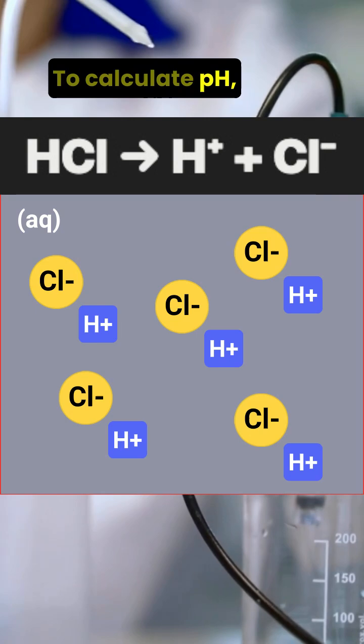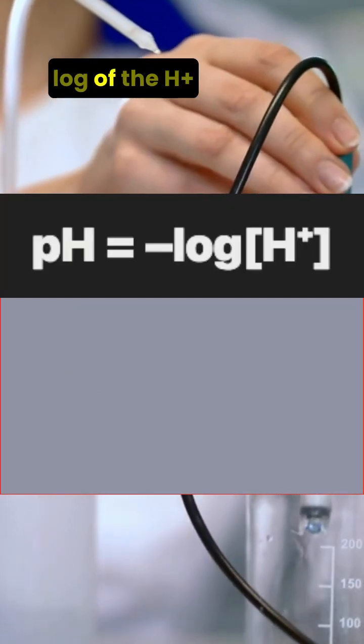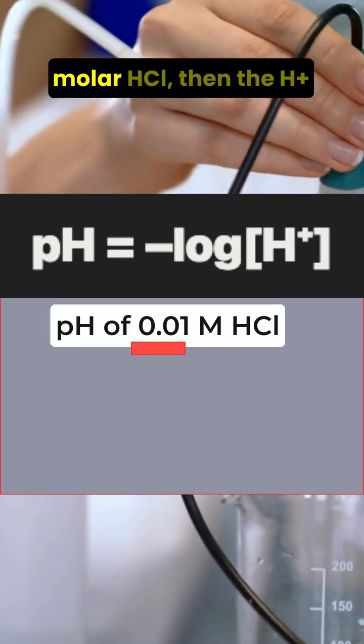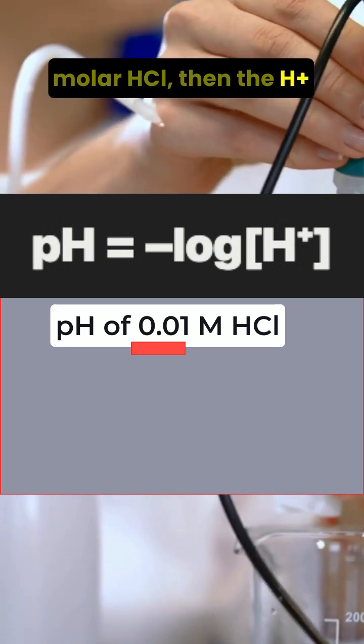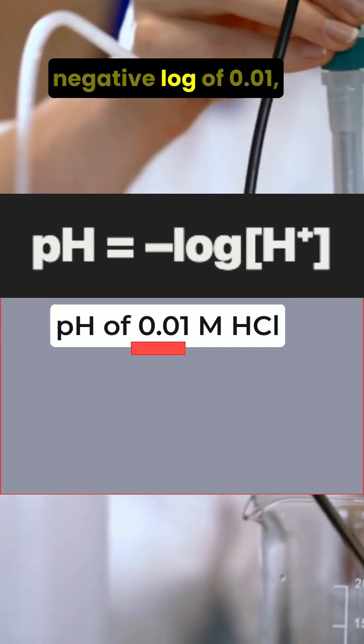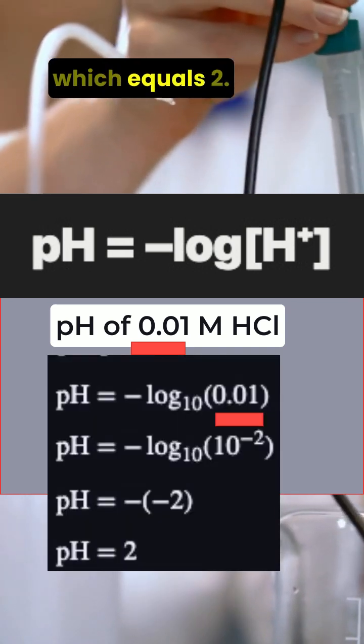To calculate pH, we use the formula pH equals negative log of the H+ concentration. So if you have 0.01 molar HCl, then the H+ concentration is also 0.01. The pH would be negative log of 0.01, which equals 2.